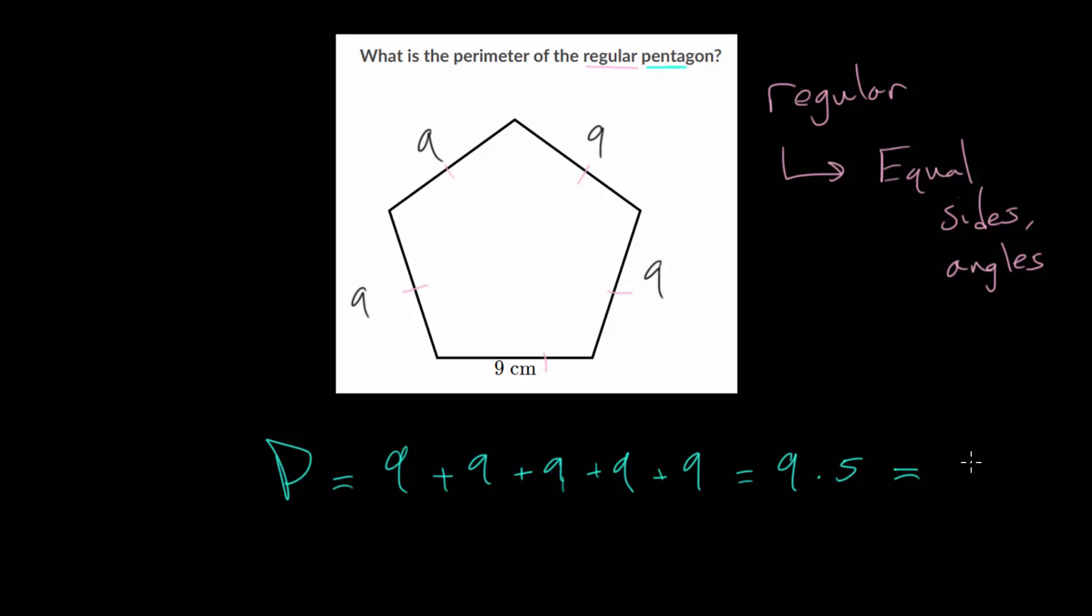And of course, 9 times 5 is 45. But we always need to be careful to put our units in. Since each of these are in centimeters, our total perimeter would be 45 centimeters.